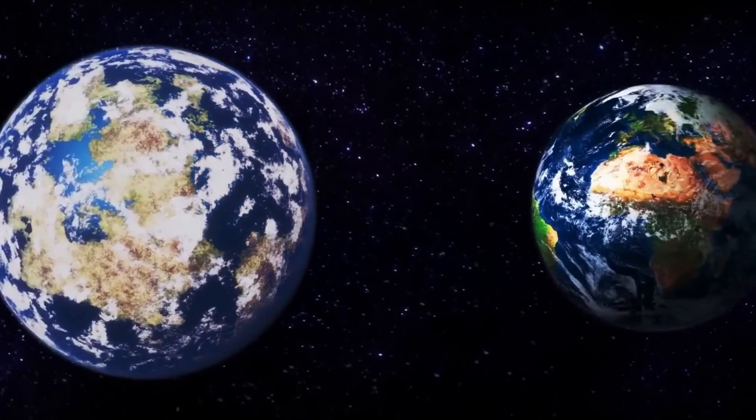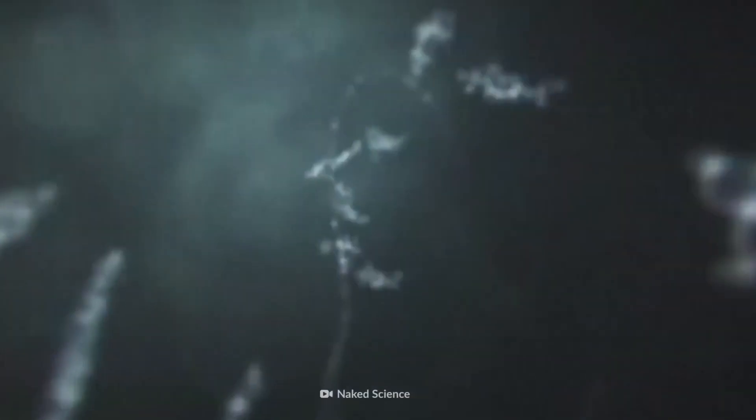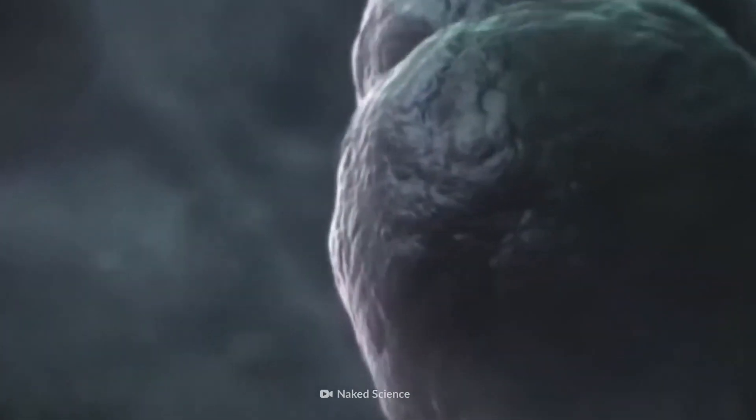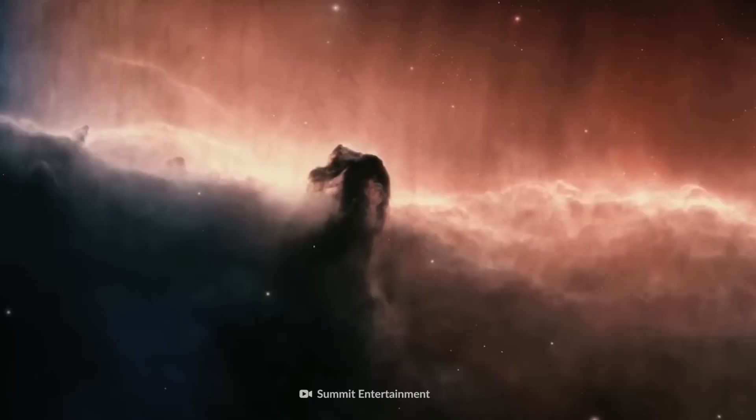Only this exoplanet could be a little too big to be superhabitable. It has a mass almost four times that of Earth. A rocky planet this big could have a single colossal continent that would have huge deserts in its center. But the coastline washed by Kepler's ocean could be your perfect spot to move to.